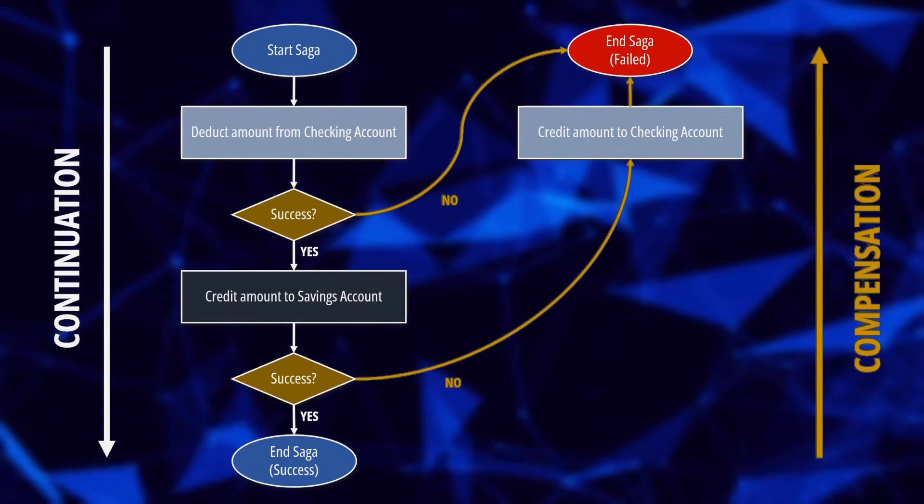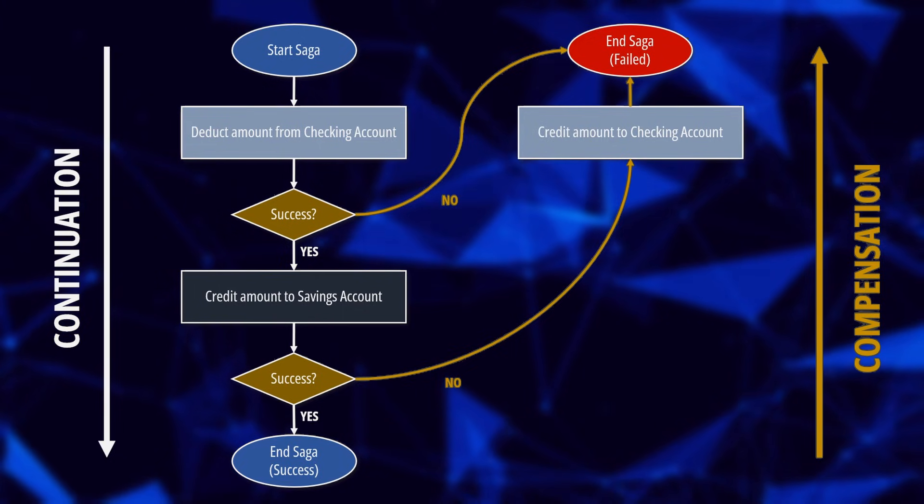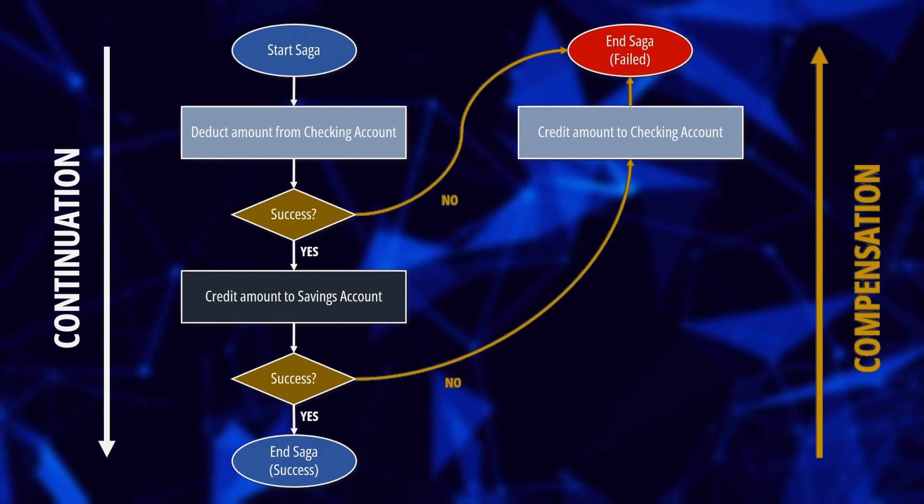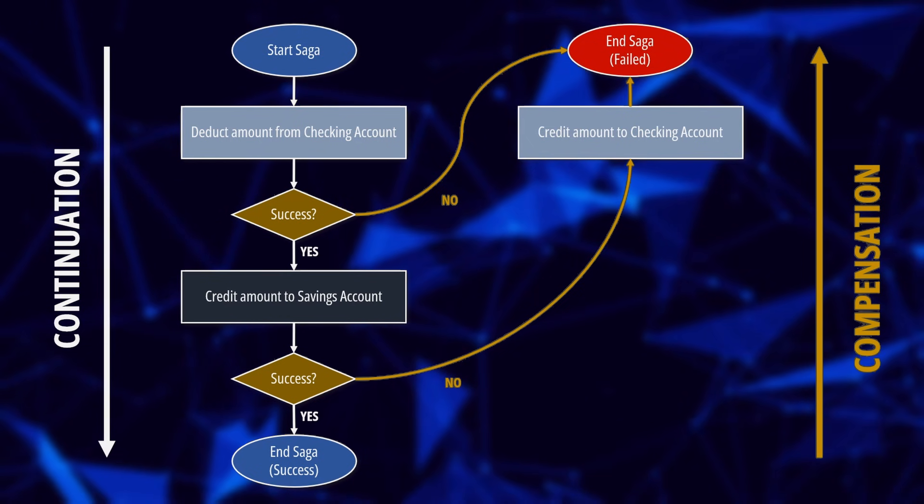For instance, should we fail to credit the target account, we would perform a credit of the source account to compensate the initial debit operation. In the original paper by Hector Garcia-Molina published in 1987, the concept of long-lived transaction is tied to time. Today, we can break away from that concept and consider a long-lived transaction as any transaction that has more than one operation.